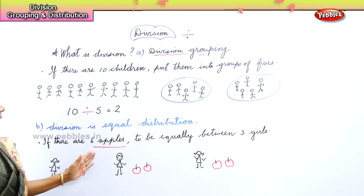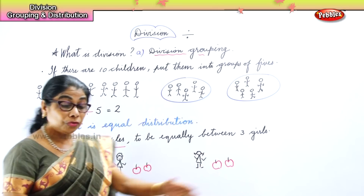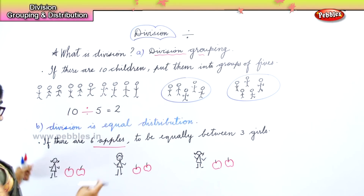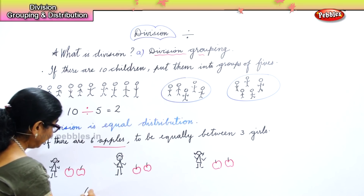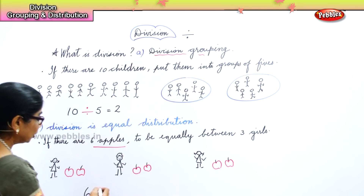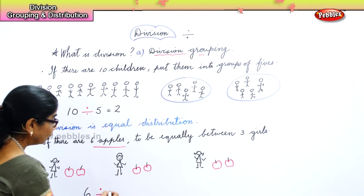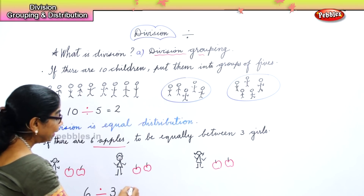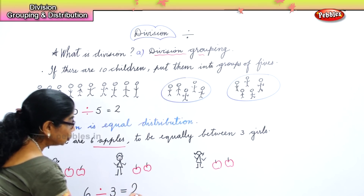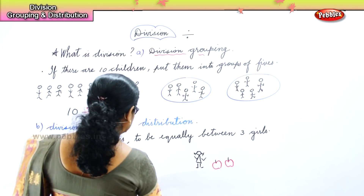How many apples are there? Six apples to be equally divided between three girls. The division sign — between three girls. And how much does each girl get? Each girl gets two apples.